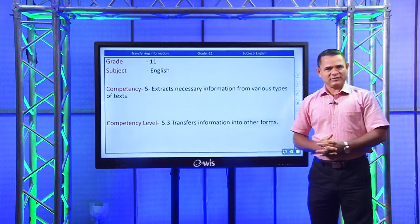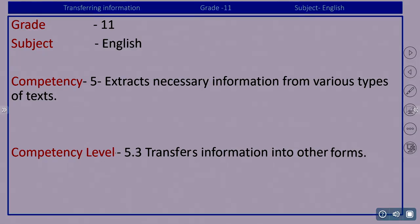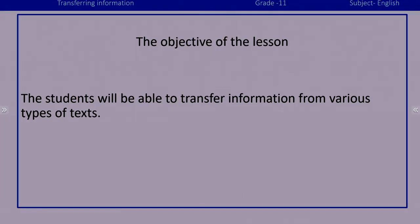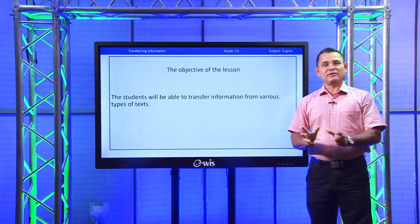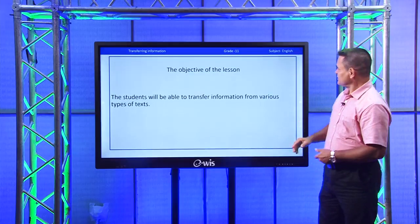Now let us see different types of text and how to extract information and how to transfer them into other forms — that means from a paragraph into a table, or from a graph to fill in the blanks. Let us see some of these examples. The objective of the lesson: students will be able to transfer information from various types of text into another form.